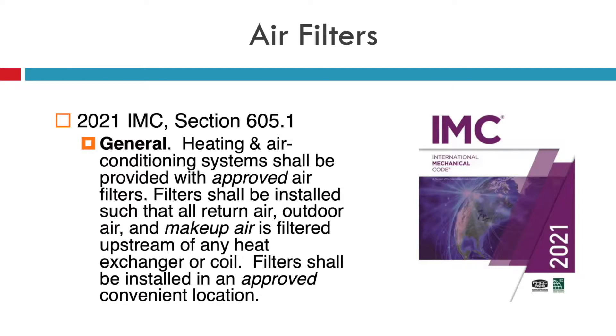When it comes to the 2021 Mechanical Code, in the 2021 IMC in Section 605, the general code reads that heating and air conditioning systems shall be provided with an approved air filter. Those filters shall be installed such that all return air, outdoor air, and makeup air is filtered upstream of any heat exchanger or coil.